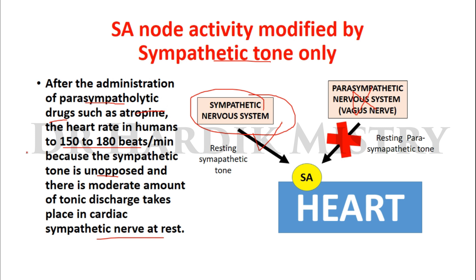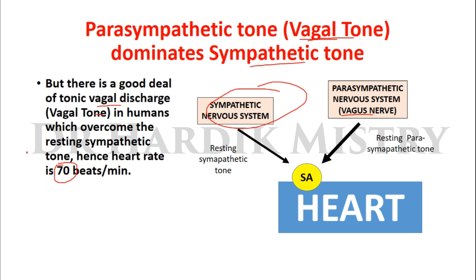Without vagal tone the heart rate would be 150 to 180 beats per minute, but due to the continuous activity of the parasympathetic nervous system it partially blocks the sympathetic tone, and hence the heart rate is 70 beats per minute. It is also notable that people with cardiac abnormalities have higher sympathetic tone with decreased parasympathetic dominance. When vagal tone decreases, cardiac abnormality increases.